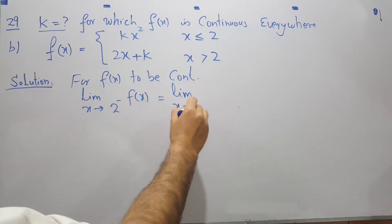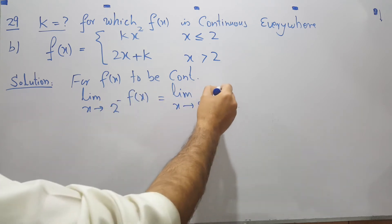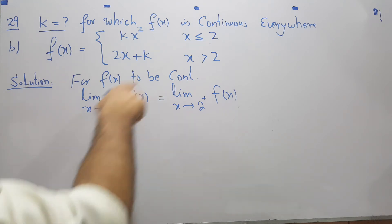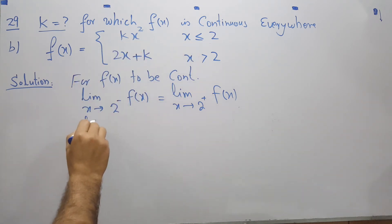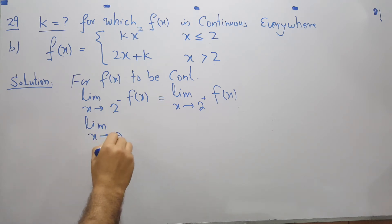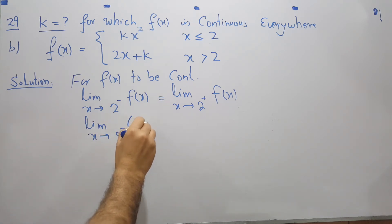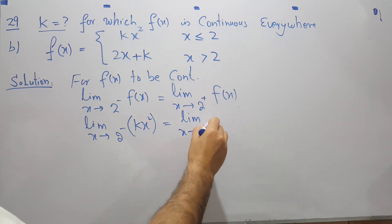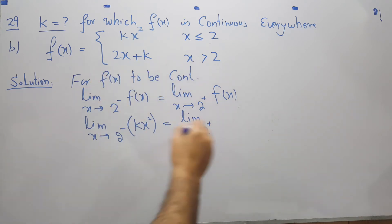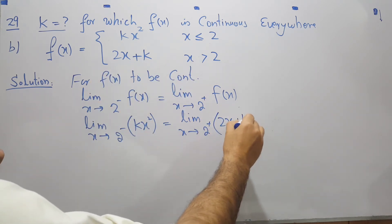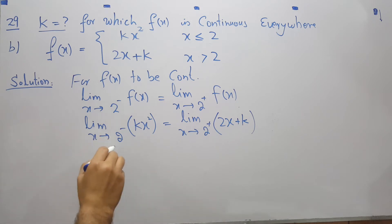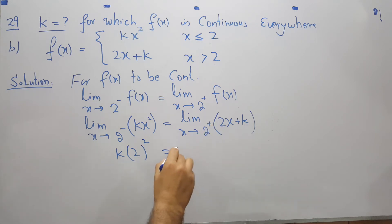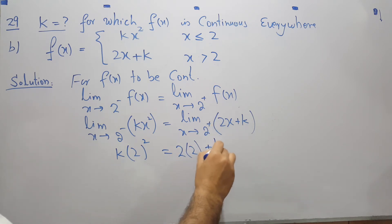x approaches 2 from the negative side and from the positive side should give the same value. When x approaches 2 from the negative side we have kx squared, and when we approach 2 from the positive side we have the other function.